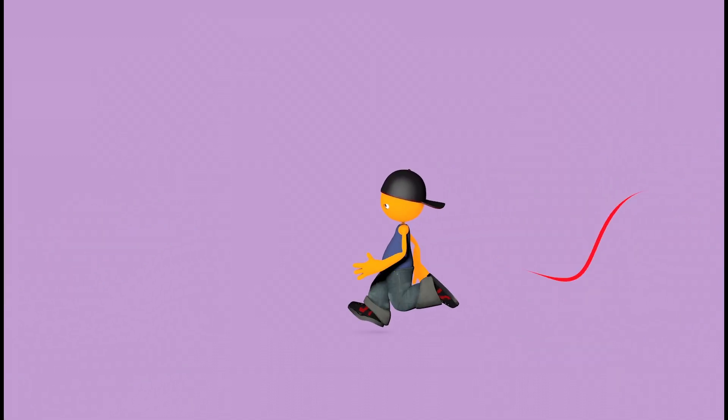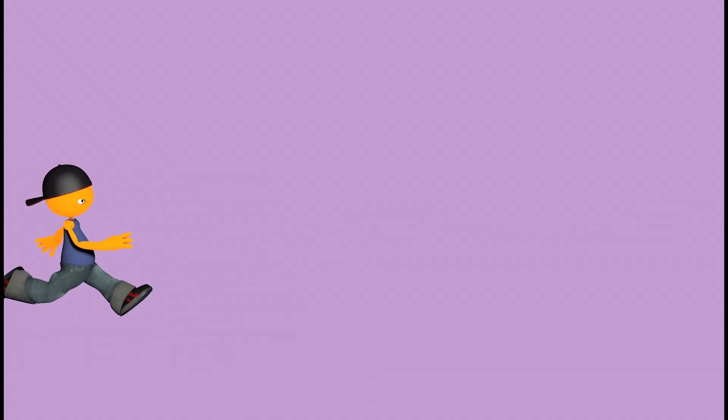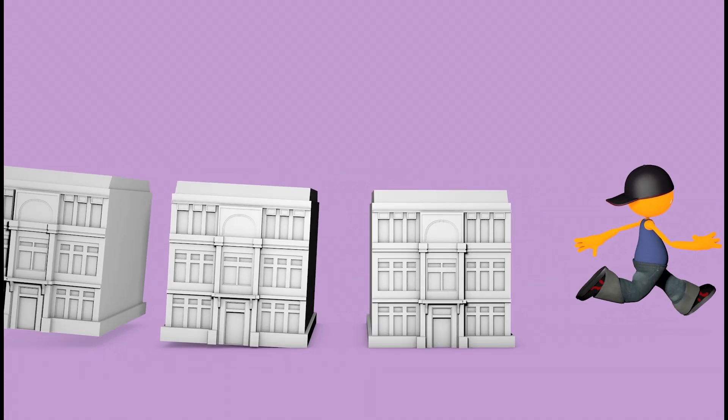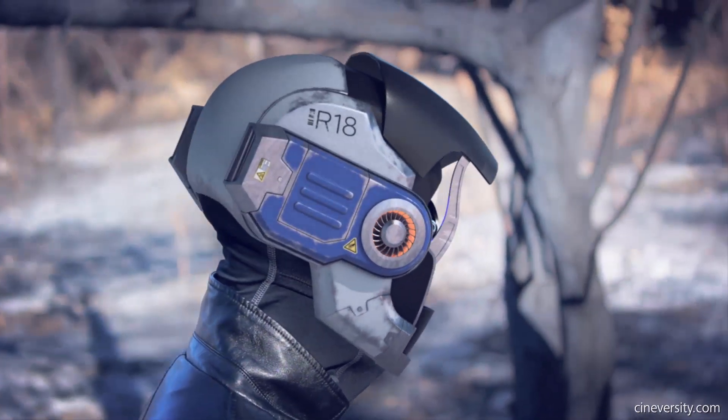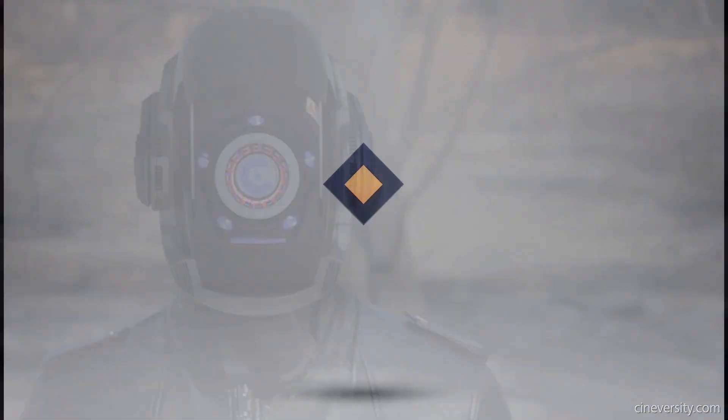Ever wonder how magical superpowers are created? Or how buildings fold in on themselves? Visual effects uses 3D modelling and animation to produce realistic looking worlds, objects or effects on the big or little screen.